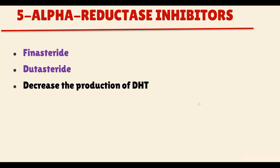Currently, we have two most popular 5-alpha reductase inhibitors: finasteride and dutasteride. They both decrease the production of dehydrotestosterone. To understand their mechanism of action and the conditions where we can use them, we have to recall the normal process of sex hormone secretion.